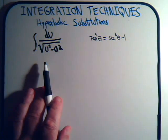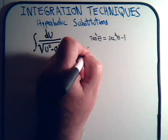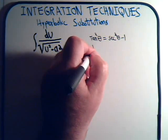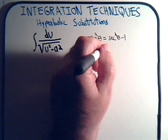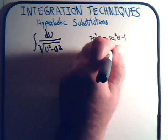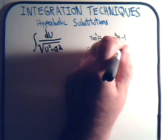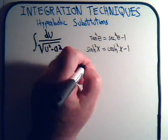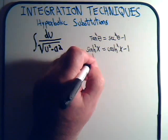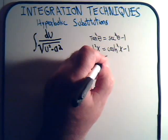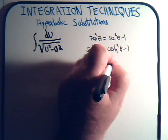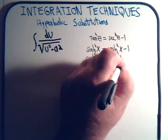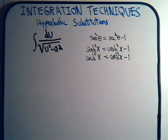Thinking in terms of hyperbolic identities, we also have the hyperbolic sine squared of x, which equals the hyperbolic cosine squared of x minus 1 — same general form, a variable squared minus a constant. And in fact, the hyperbolic secant squared of x equals the hyperbolic tangent squared of x minus 1, also the same general form.